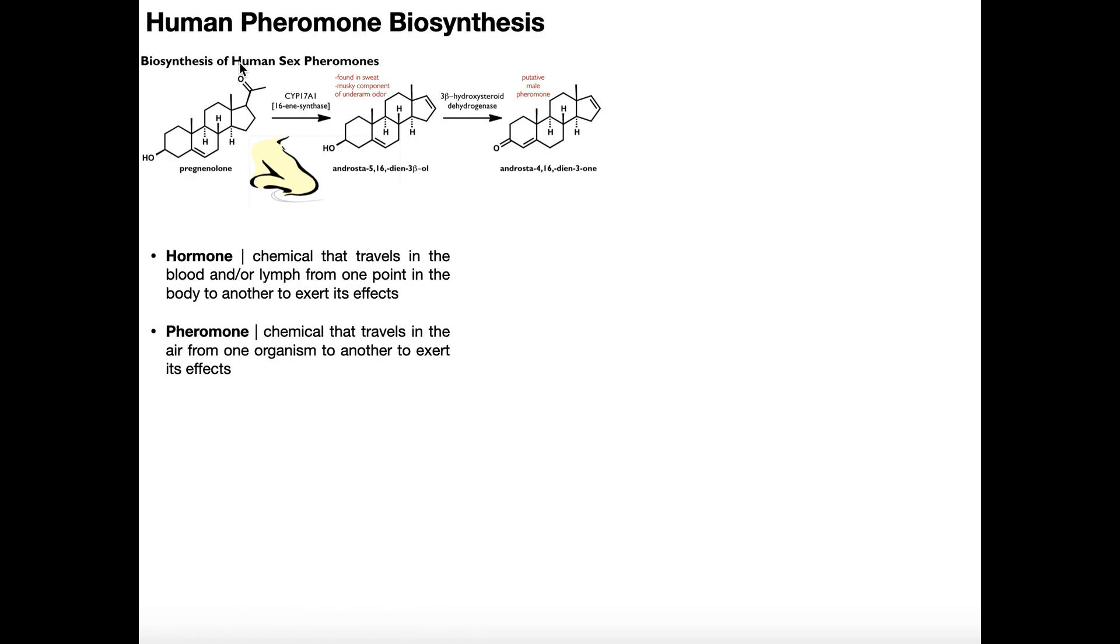And what it essentially does is a net elimination reaction. Elimination from organic being, you have loss of a leaving group followed by formation of a double bond. You can see here in the next molecule over the product that we have a double bond here between the 16 position and the 17 position, and now this ketone is gone.